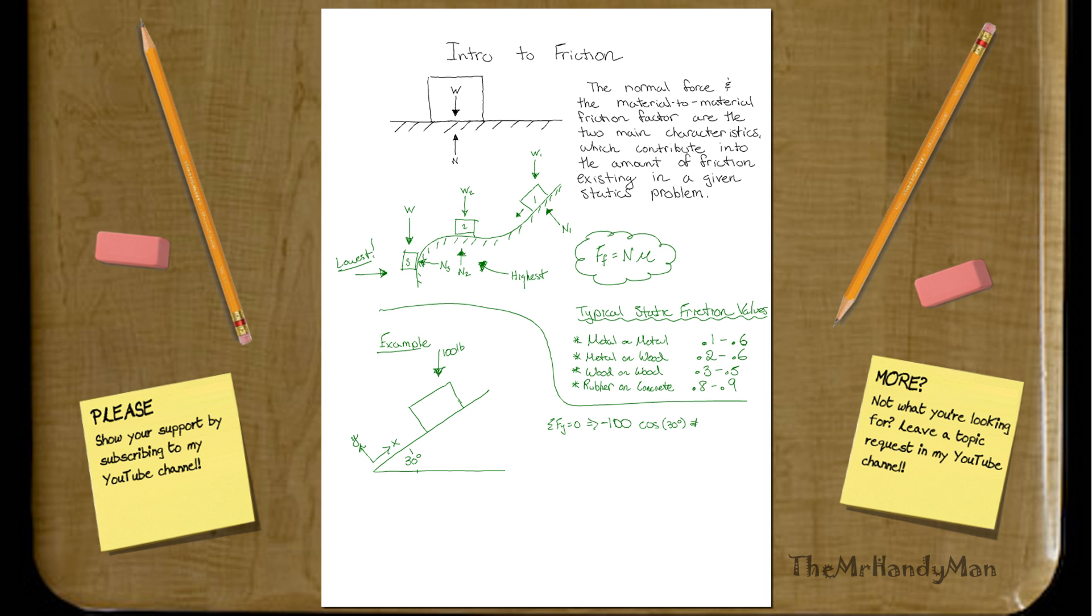which is going to be right here. So you'll have normal, and then you're going to have this component, which is going to go against it, right? And that will equal zero. Well, you find that normal force will equal 100 cosine of 30, which equals 86.6 pounds.